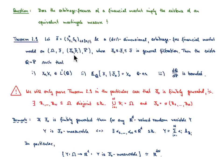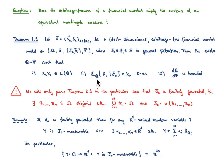The statement is the following: there exists an equivalent probability measure Q with the following properties. First, the R^d-valued random variables of our discounted price process, x0 and x1, are integrable. Second, the martingale property is satisfied, meaning the conditional expectation of x1 given sigma-algebra F0 with respect to Q equals x0, Q-almost surely.